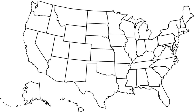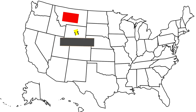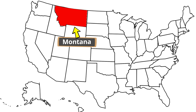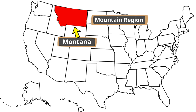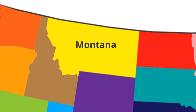We have a United States map and we want to find out where the state of Montana is. Montana is right up here in a region of the United States called the mountain region. Now we are going to look at the different places that border the state of Montana.